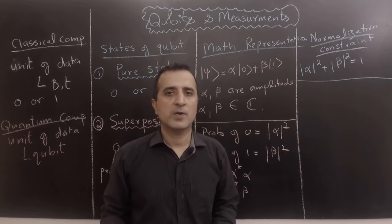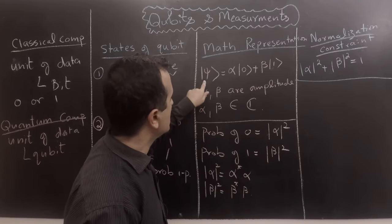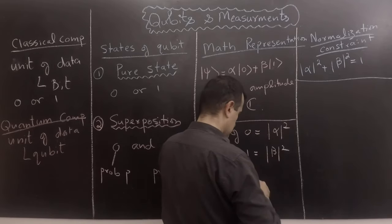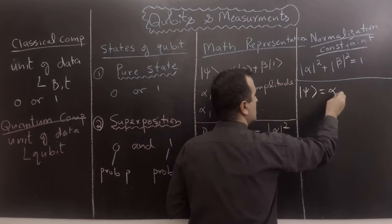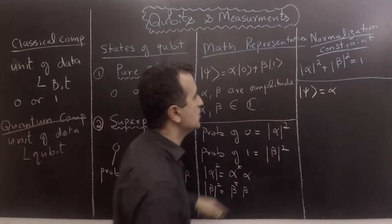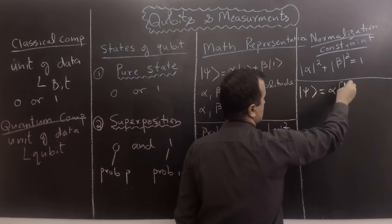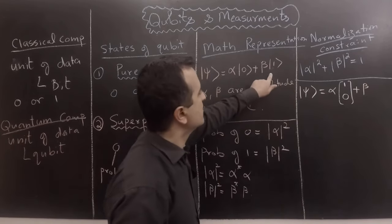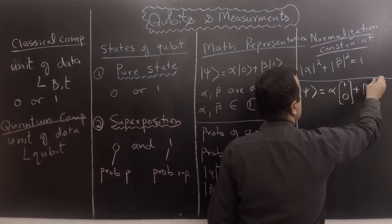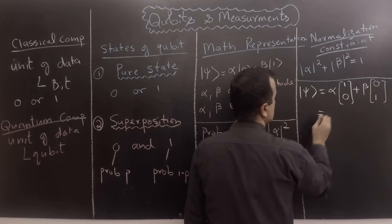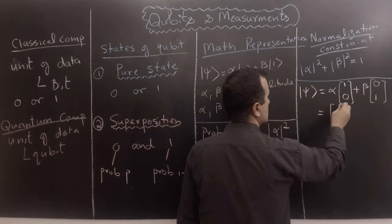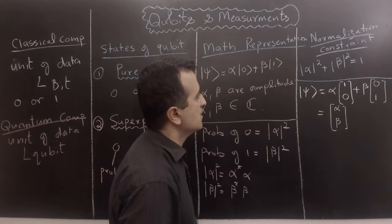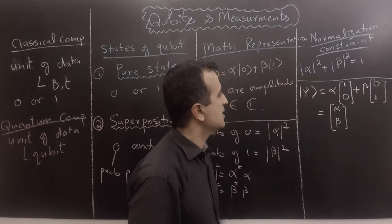Let's look deeper into the qubit and understand what the normalization constraint means. We can write |ψ⟩ in vector form. We know |0⟩ is a vector with 1 in the zeroth position and 0 elsewhere, and |1⟩ is a vector with 1 in the first position and 0 elsewhere. So |ψ⟩ is a vector whose zeroth element is alpha and first element is beta.